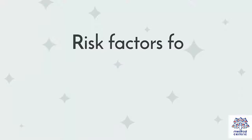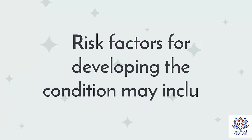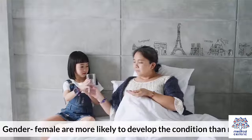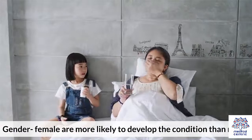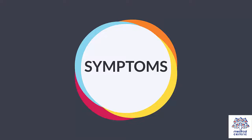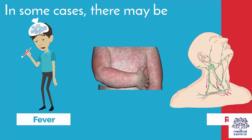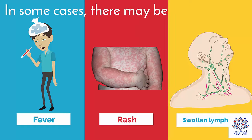Risk factors for developing the condition may include a family history of arthritis or an autoimmune disorder. Gender is also a factor — females are more likely to develop the condition than males. Symptoms include pain, joint swelling, stiffness, reduced physical activity, poor appetite, and extreme fatigue or drowsiness. In some cases there may be fever, rash, and swollen lymph nodes.